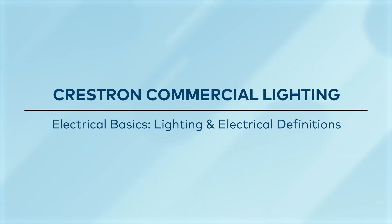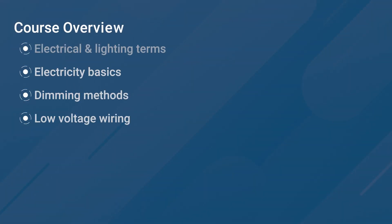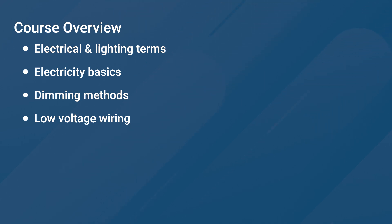Welcome to the Commercial Lighting Commissioning Technician course. In this segment we will discuss electrical and lighting terms, followed by some electrical basics. Then we will look at methods of controlling lighting and connecting the systems together. First, let's look at some standard terms and definitions for the basic concepts we'll encounter when working with controllable lighting.